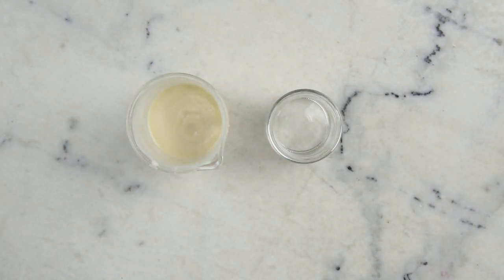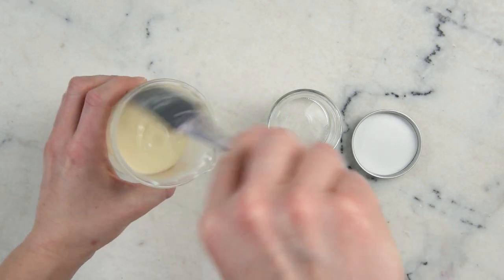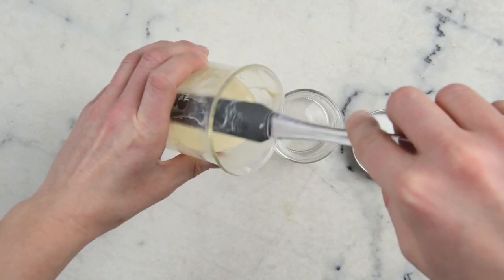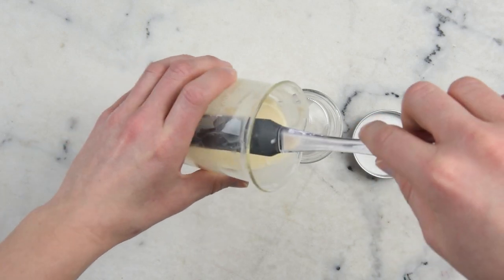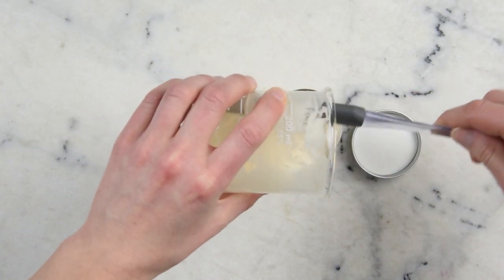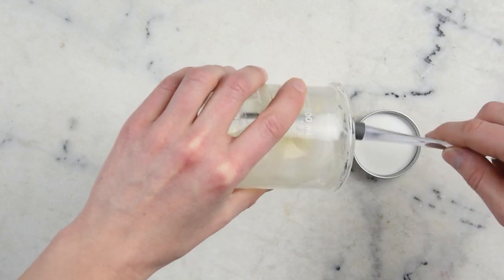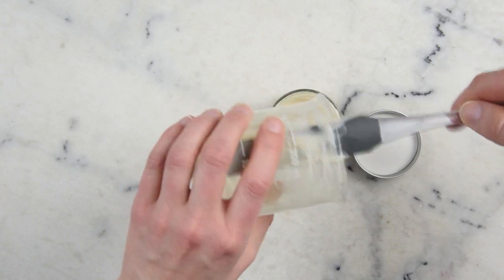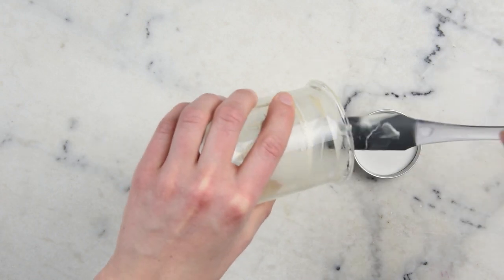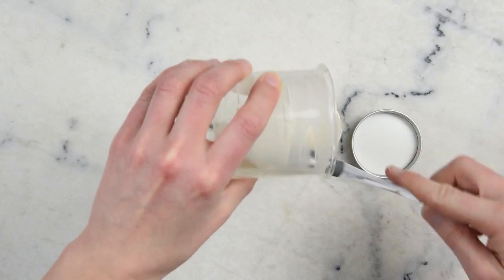We are now ready to move this into our container. So this is a little half cup, 120 milliliter jar. And so this lotion will continue to thicken up over the next day or so. So if you're concerned that it seems a little bit thin and not very Nutella-like, it will get thicker. Have no worries.